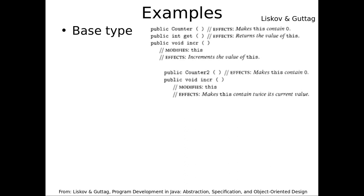Here's Counter 2, which purports to be a subtype of Counter. Counter 2 starts at zero and the effect of increment is to double the current value. Can I pass Counter 2 legitimately around as a subtype of Counter? If I have code that depends on a counter and I secretly pass it a Counter 2, could it be really surprised? Yes — it will always be zero because doubling zero stays zero.